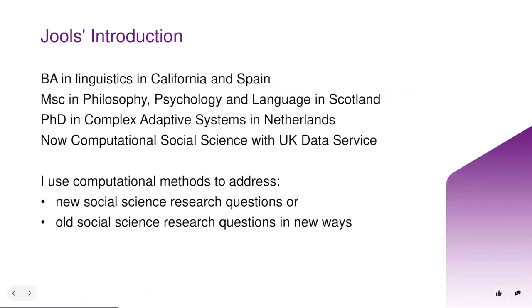I'm Jules. I started in linguistics, then moved to philosophy, psychology and language, and then to complex adaptive systems. Now I'm a computational social science researcher with the UK Data Service. Computational social science uses new computational methods or computationally intensive methods to address social science research questions — questions that can't be addressed at all without computational means, or classic social science research questions addressed in new ways that were not previously available.